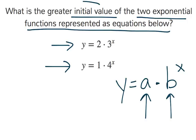And in this case, we're looking at the initial value, so we're looking for our a's, and we can go ahead and circle those. They're the coefficient without the power or the exponent next to it.